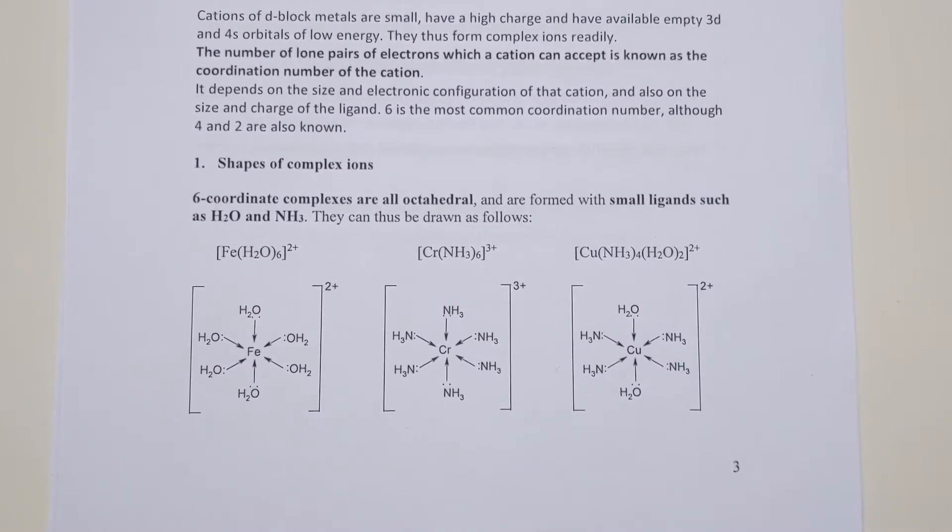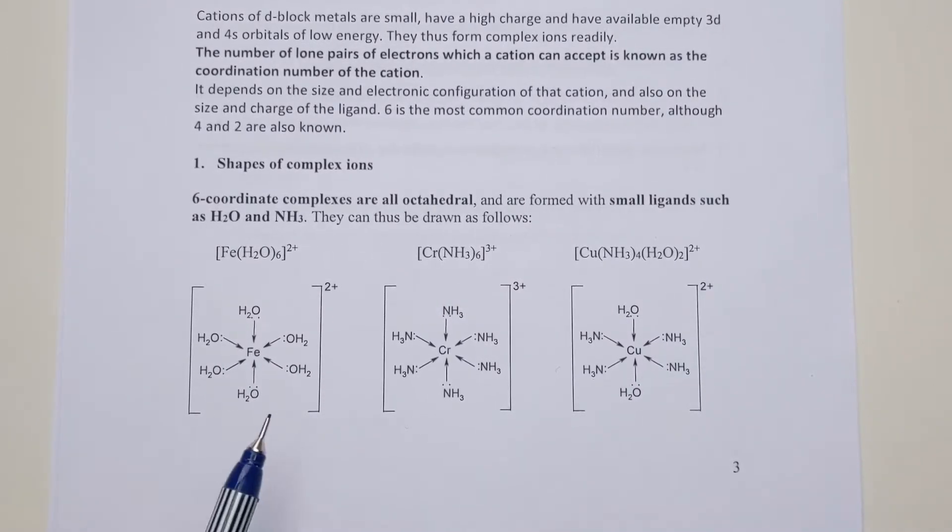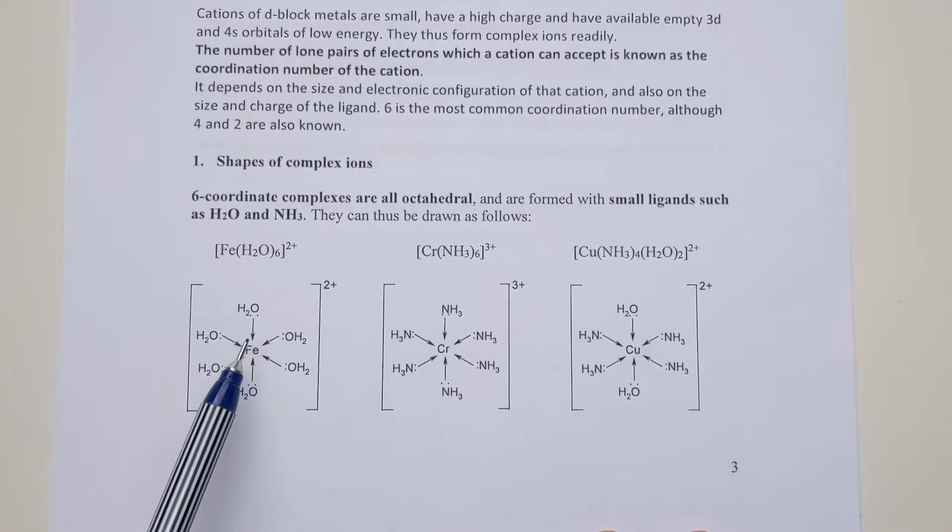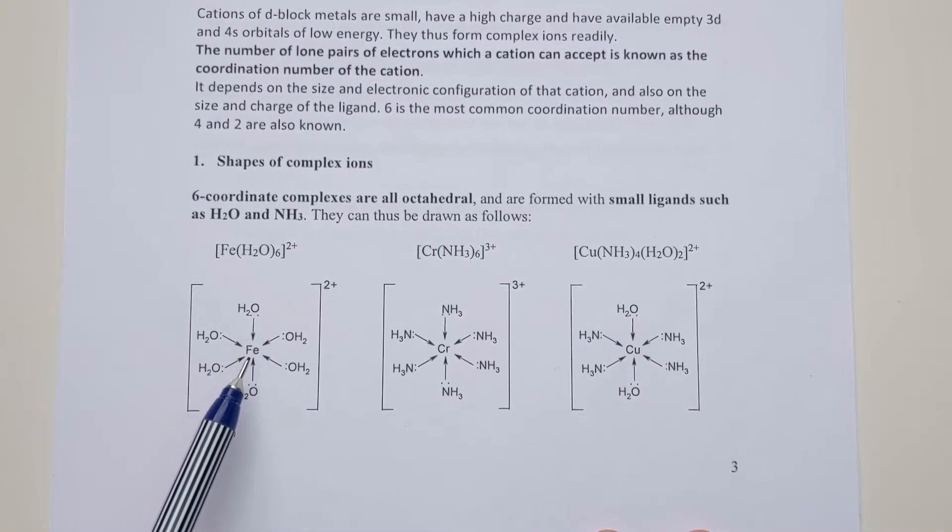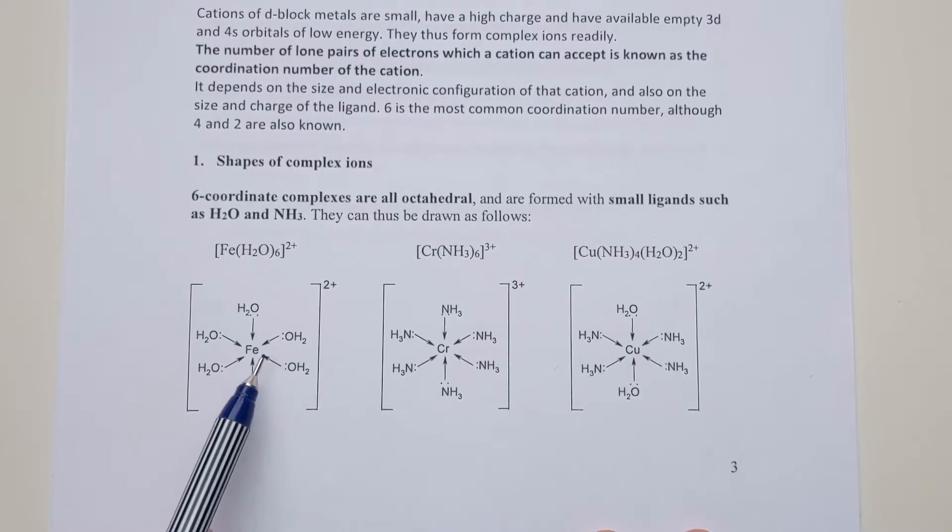We've now looked at the two main components of a transition metal complex: the metal ion itself, which is electron deficient with empty d-orbitals that can receive electrons, and the ligands, which have lone pairs that can form coordinate bonds to the metal ion, making it happy having received some electrons.